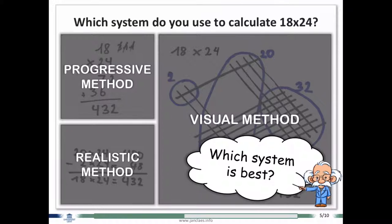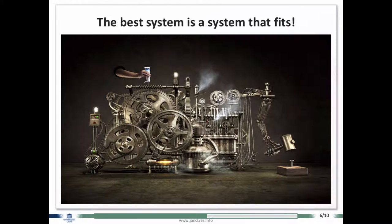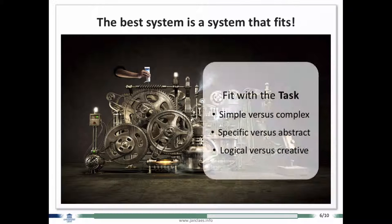Well, the answer is you have to use a system that fits, a system that fits with some things. This is a picture of your brain. It's a complex machine who is capable of performing some tasks, for example to hammer on a nail.